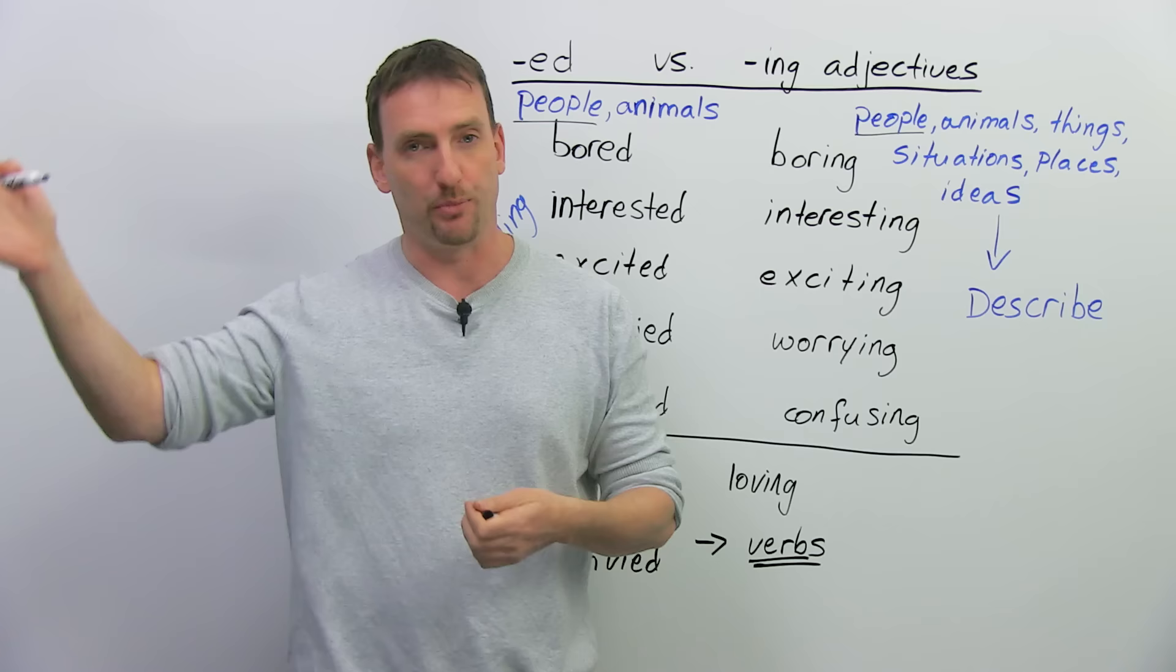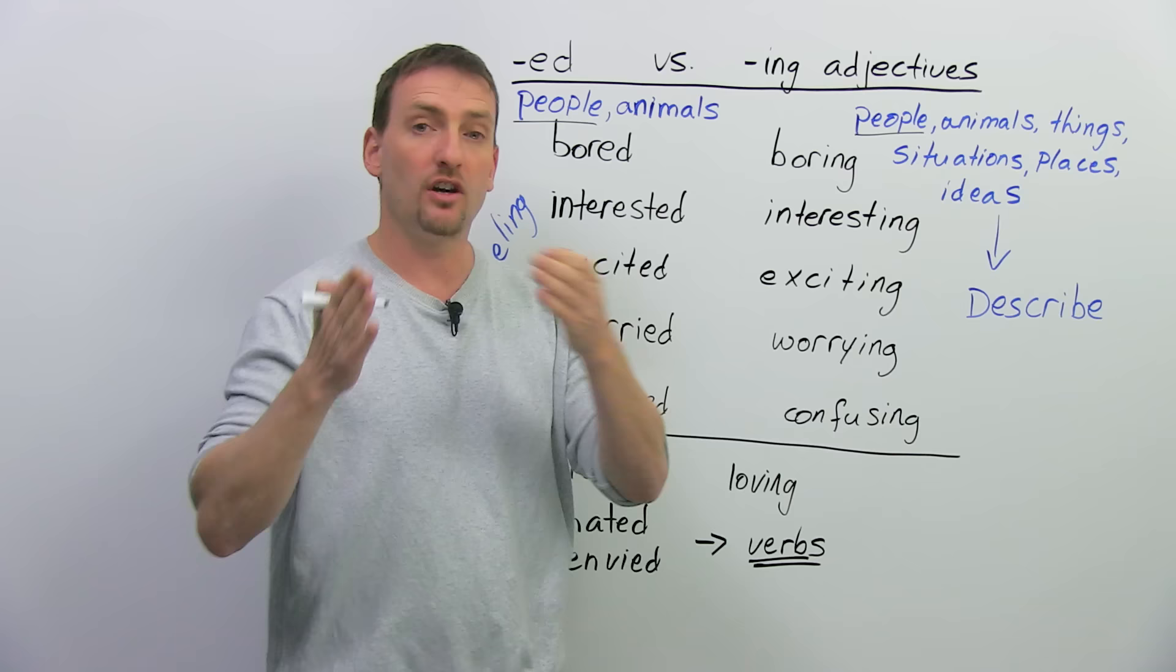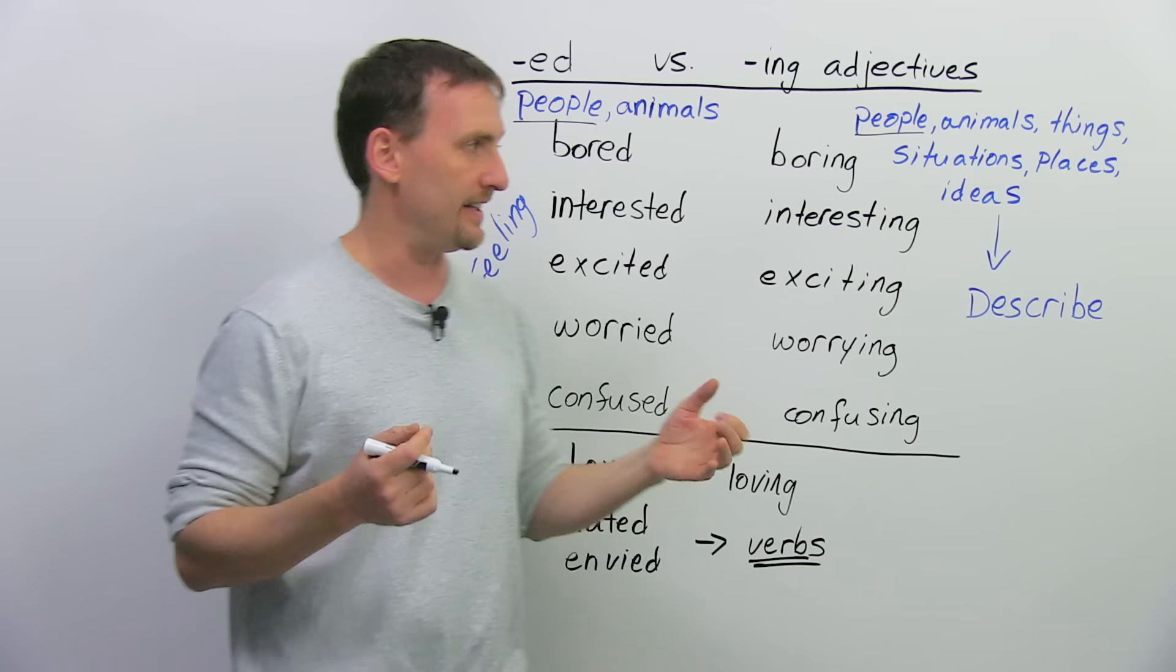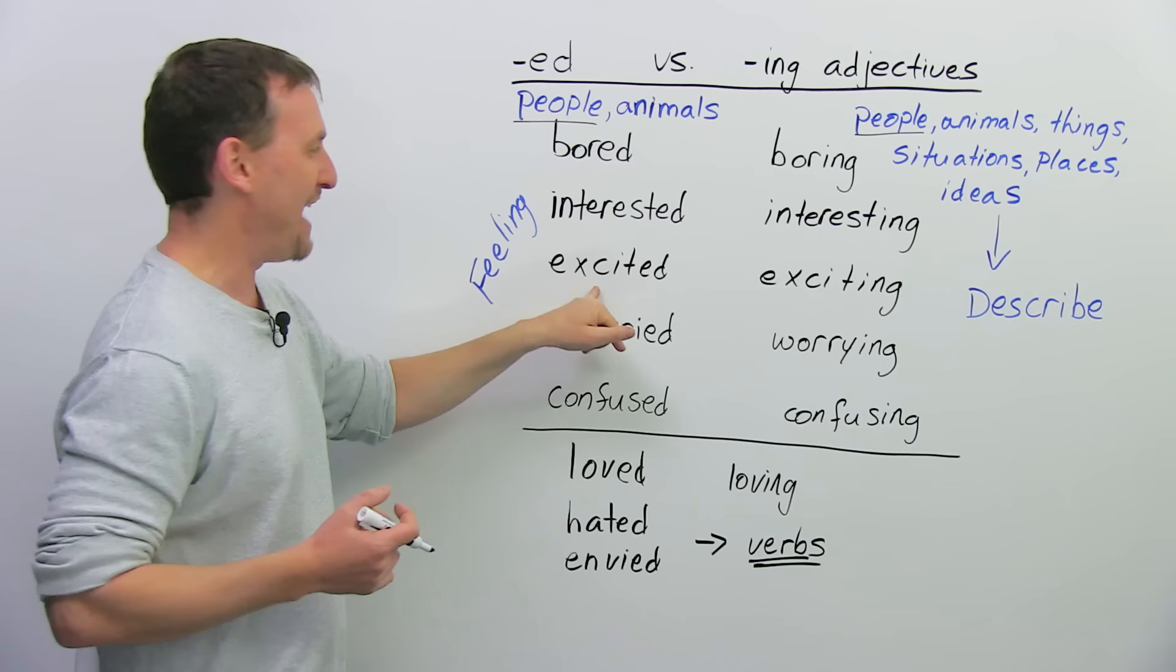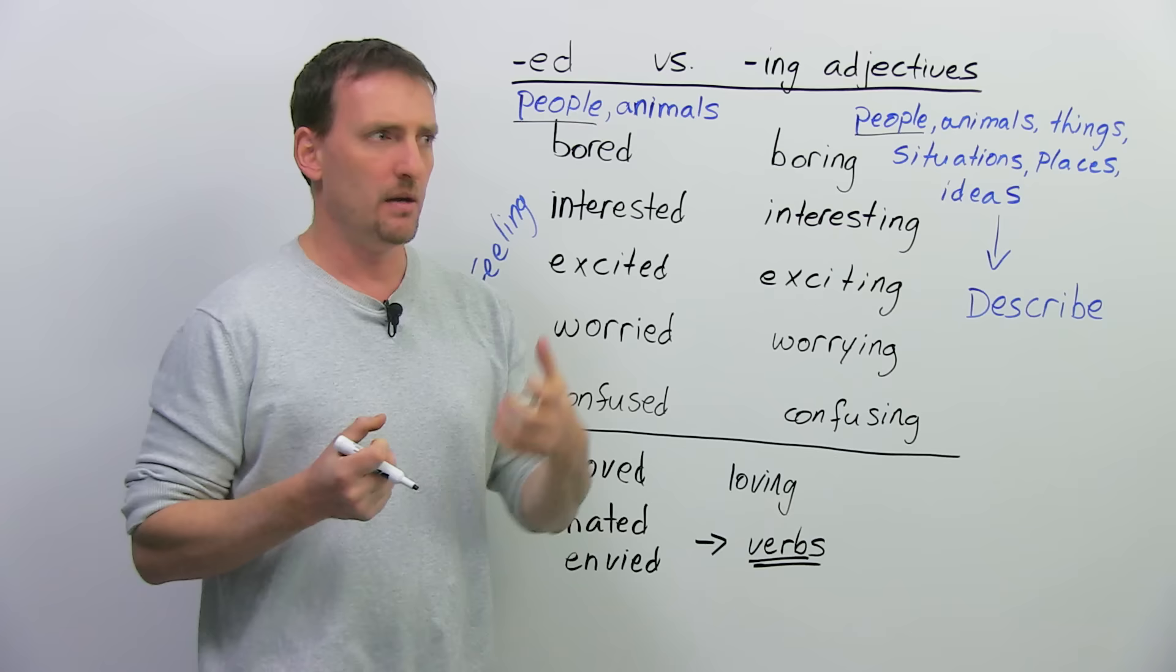So one thing, the -ing causes the feeling -ed in the person. Very important to understand that. So I am bored by the movie, which is boring. I am interested in this lesson because this lesson is very interesting. I'm excited, something is exciting. So for example, I'm excited to go see the concert because this artist is very exciting, this singer or whatever.